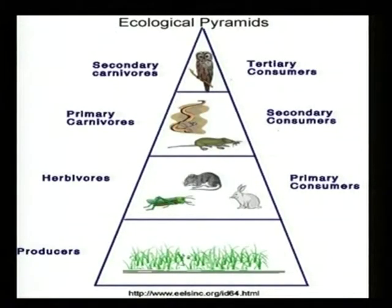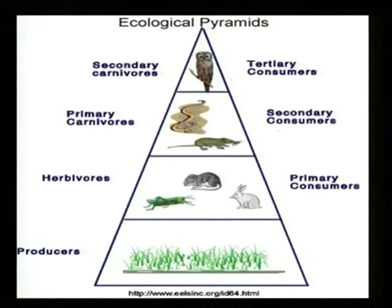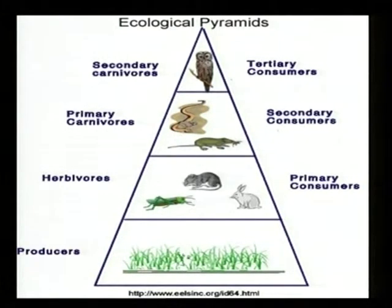This is called an ecological pyramid. Plants are called producers. Animals like rat and rabbit are called primary consumers. Primary consumers are also called herbivores.